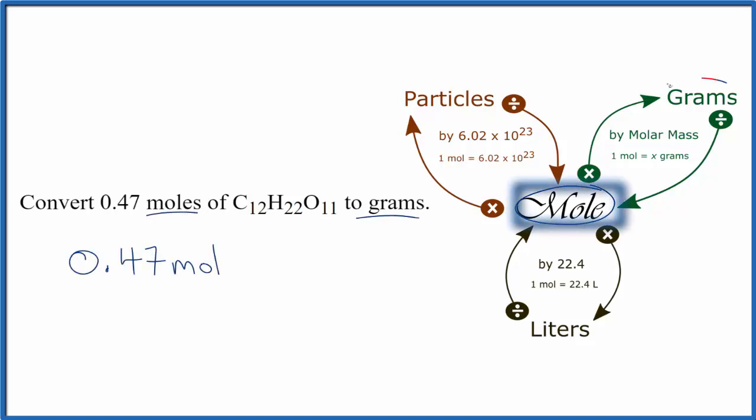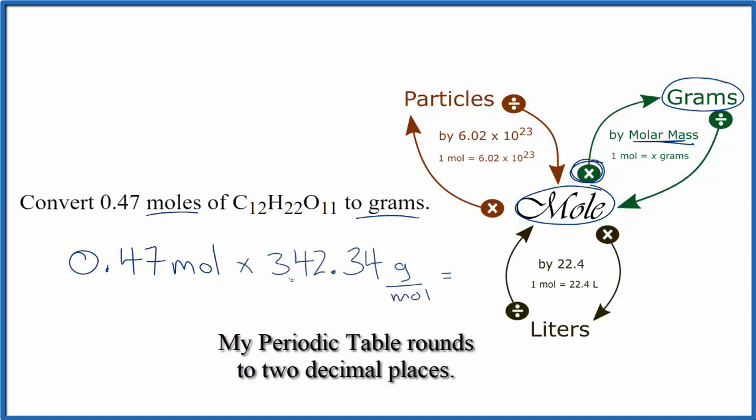we start with moles, we want to end up with grams, we multiply by the molar mass. And to find the molar mass for sucrose here, we add up the masses of all the atoms. That gives us 342.34 grams per mole.